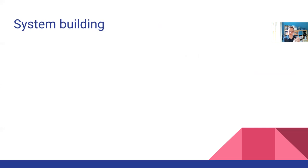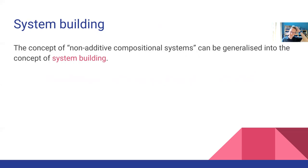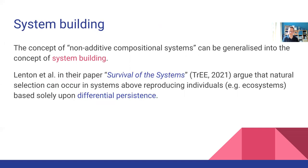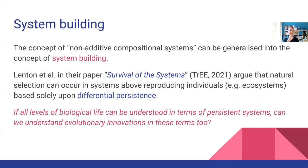The second aspect I want to talk about today is this idea of system building, which is a generalisation of what I previously talked about as non-additive compositional systems. In a recent paper in Trends in Ecology and Evolution, Tim Lenden and colleagues argue that natural selection can occur in systems above reproducing individuals, such as ecosystems, based solely upon differential persistence. That raises the question: if all levels of biological life can be understood in terms of persistent systems, can we understand evolutionary innovations in these terms too?